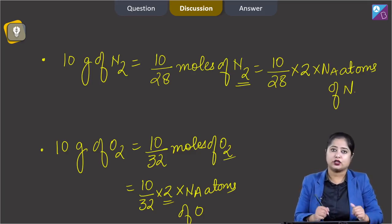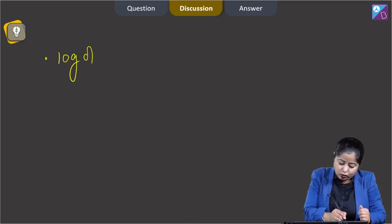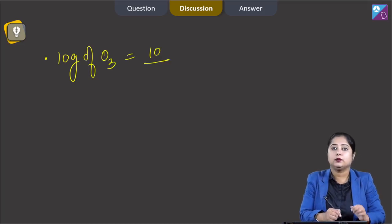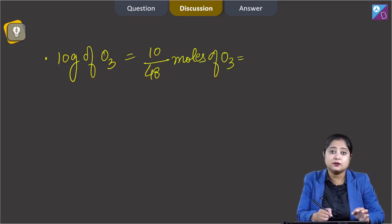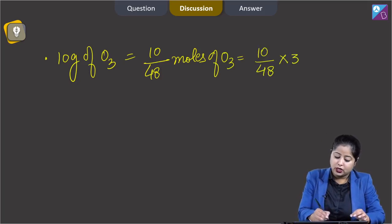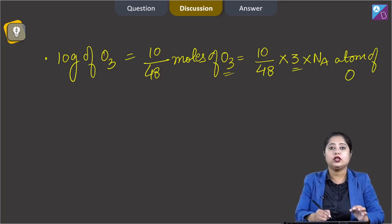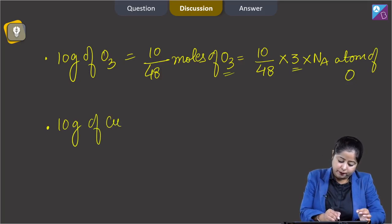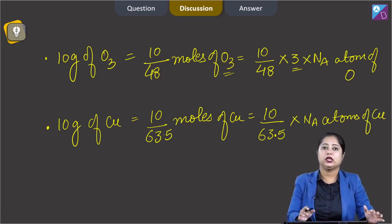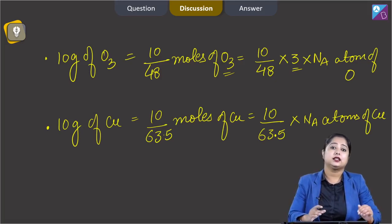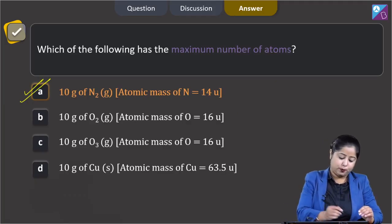For 10g of O3: molar mass is 48 g, so atoms = (10/48) × 3 × NA, since atomicity of O3 is 3. For 10g of copper: atoms = (10/63.5) × NA. Comparing all four, the maximum number of atoms is in option (a), 10g of N2 gas. So the correct answer is option A.